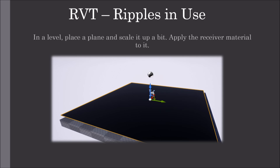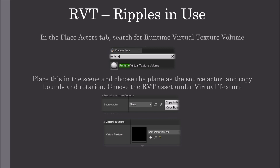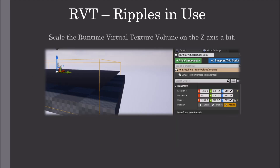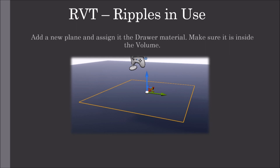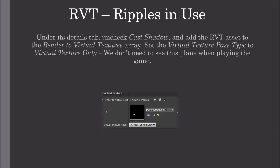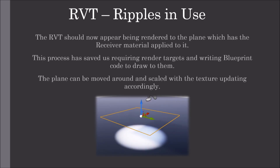In the level, place a plane and scale it up a bit, then apply the receiver material to it. In the Place Actors tab, search for Runtime Virtual Texture Volume, place it in the scene, and choose the plane as the source actor — copy bounds and rotation. Choose the Runtime Virtual Texture asset under the virtual texture header, and scale the volume on the Z-axis slightly. Add a new plane, assign it the drawer material, and make sure it is inside the volume. Under its details tab, uncheck Cast Shadow and add the Runtime Virtual Texture asset to the render to virtual textures array. Set the virtual texture pass type to virtual texture only, as we don't need to see this plane when playing the game. The Runtime Virtual Texture should now appear rendered to the plane which has the receiver material applied.